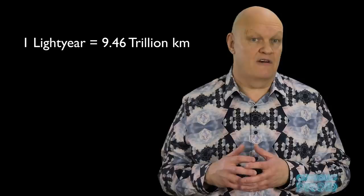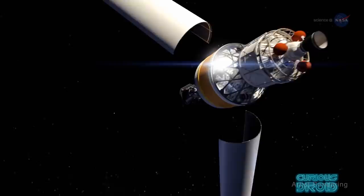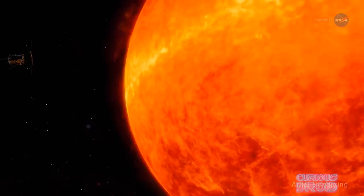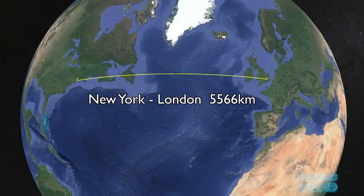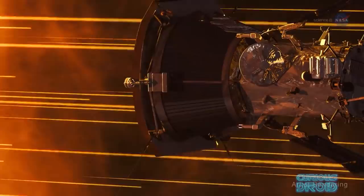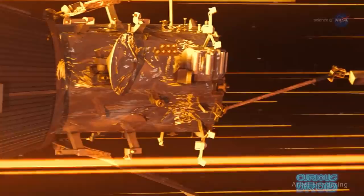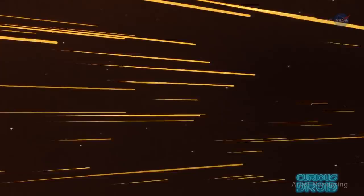But for some sort of comparison, the fastest spacecraft we have yet launched, the Parker Solar Probe which will observe and fly through the upper part of the sun's atmosphere here in 2024, will reach a maximum speed of 690,000 kilometers per hour by using 7 gravity assists on its way to the sun. The Parker could fly the 5,566 kilometers from London to New York in 29 seconds and yet it would take the Parker probe 1,565 years to travel 1 light year at just 0.064% the speed of light.